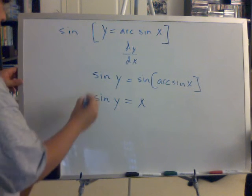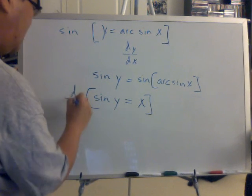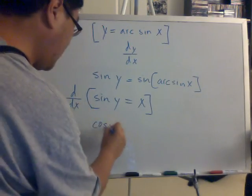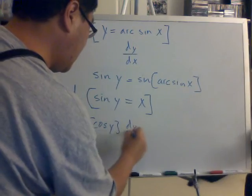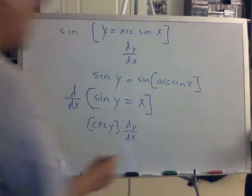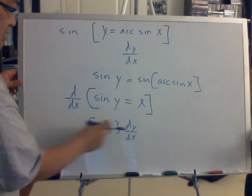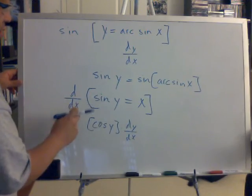And then you take the derivative with respect to x on both sides, d over dx, and you have cosine of y times the derivative dy/dx. And the reason why you take the derivative inside of the cosine is because the variable y is different from the variable x.